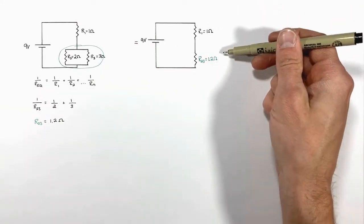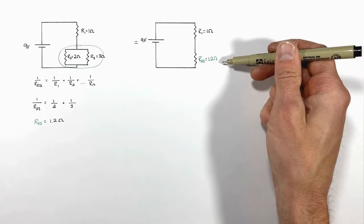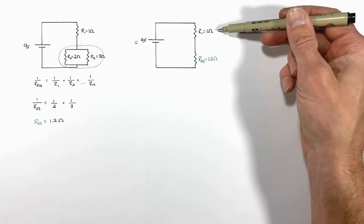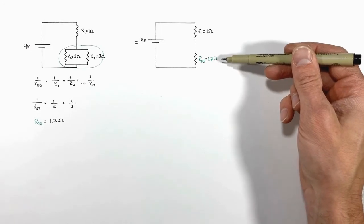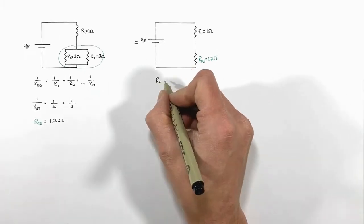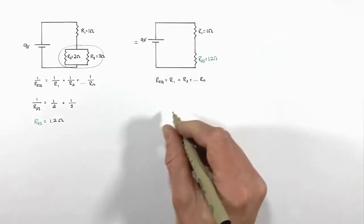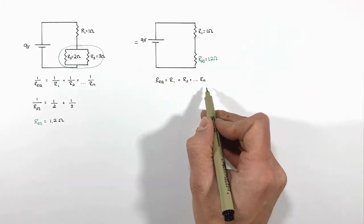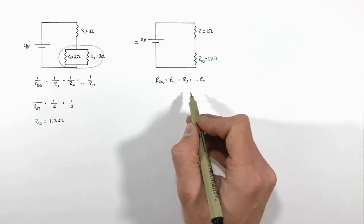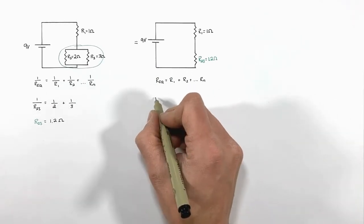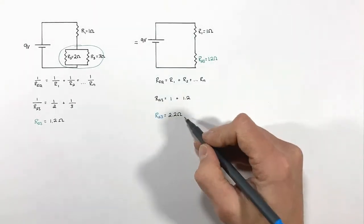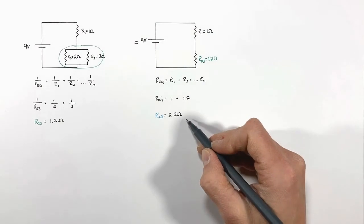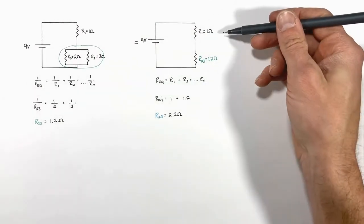Now we want to combine our remaining resistors. We have a 1 ohm resistor in series with a 1.2 ohm resistor. When combining resistors in series, we simply add together the individual resistors, and in this problem that gives us a total resistance of 2.2 ohms.